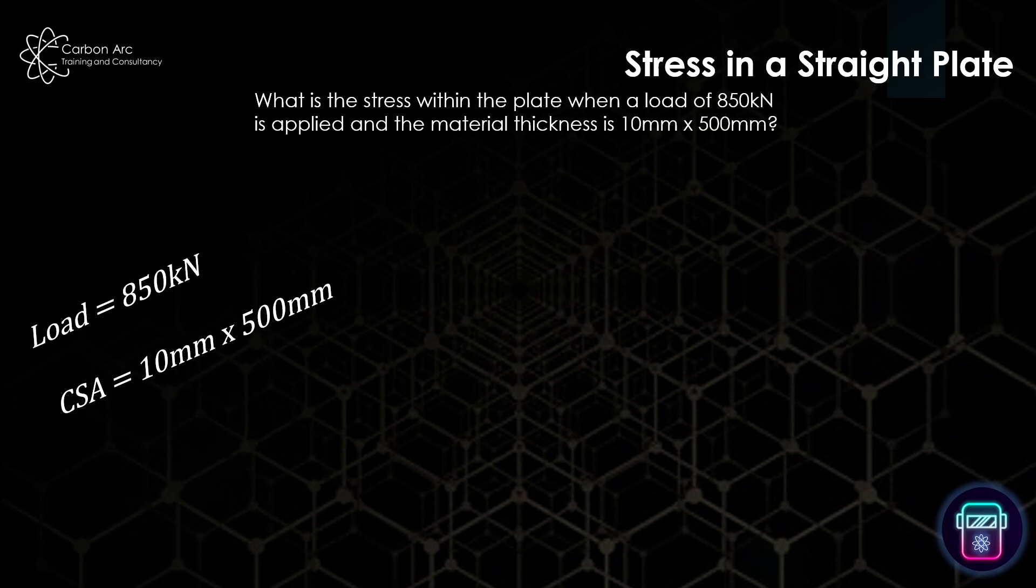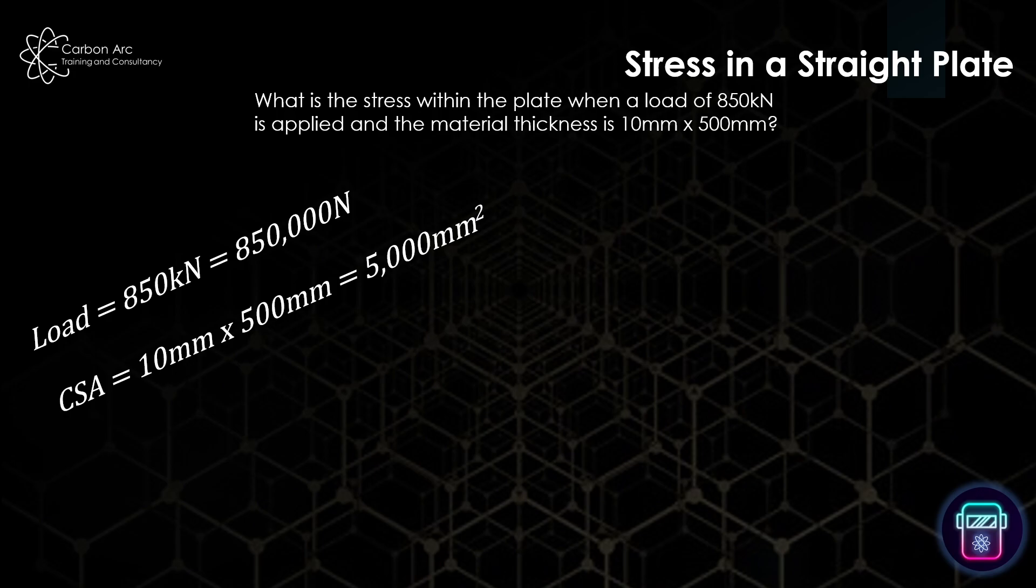So if we correct that to units we can use, we know 850 kilonewtons is 850,000 newtons and our cross-sectional is width times length, so that's 10 times 500 which gives us 5000 millimeters squared.